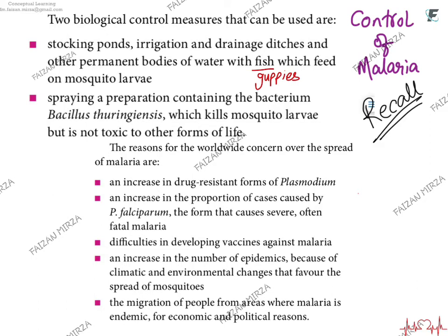The reasons why malaria remains a worldwide concern: there is an increase in drug-resistant forms of malaria that cannot be cured by quinine or chloroquine, and the alternate drugs are very expensive. There is an increased proportion of cases caused by Plasmodium falciparum, a very severe causative agent making the disease difficult to cure. A vaccine cannot be developed easily against malaria. There are constantly increasing numbers of epidemics due to climatic and environmental changes favoring mosquito breeding globally. Finally, migration of people from endemic areas for economic and political reasons spreads the disease, as female Anopheles mosquitoes already present in new regions become vectors and transmit it to locals.